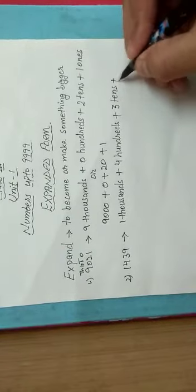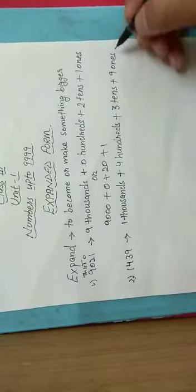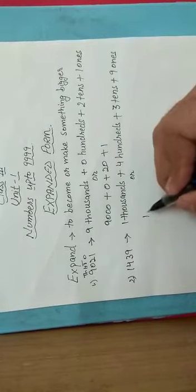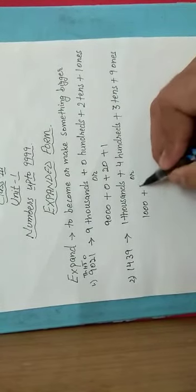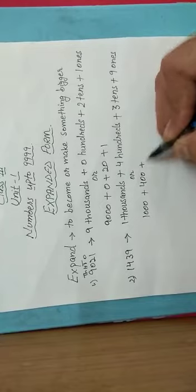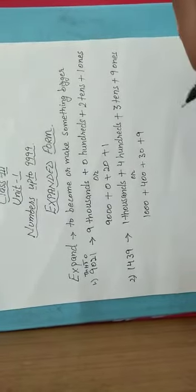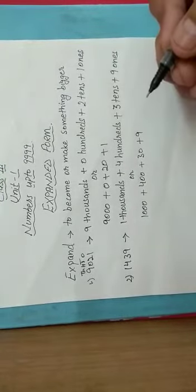Then 3 is at the tens place, so we will write 3 tens. And 9 is at the ones place, so we will write 9 ones. Or in the second way: 1 thousand plus 4 hundreds plus 3 tens, which means 30, plus 9. In this way we can easily write the expanded form of numbers.